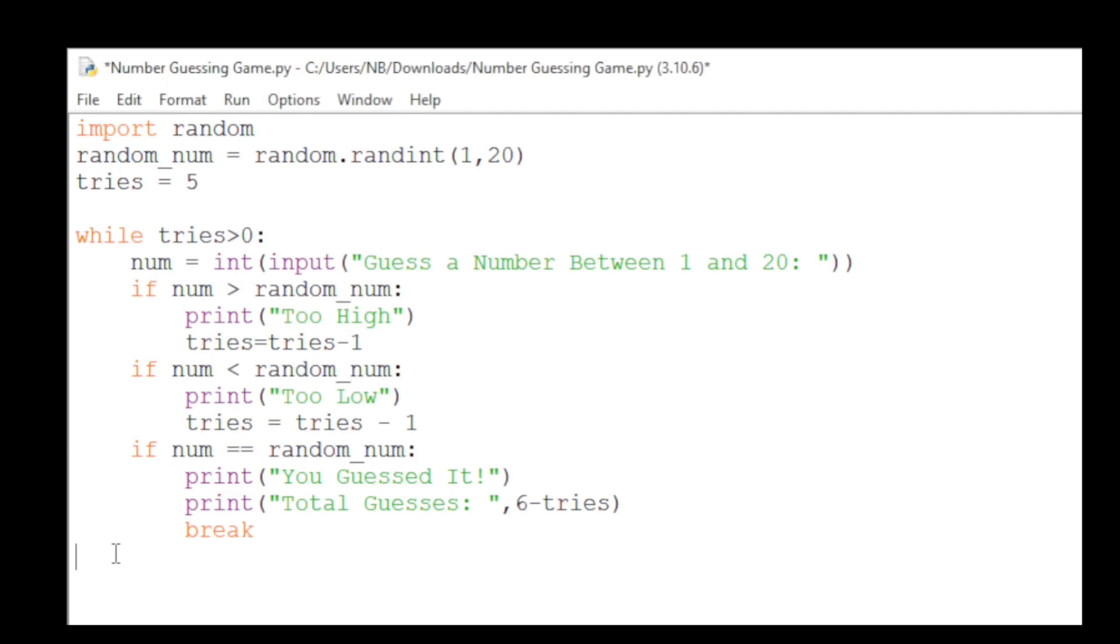Finally, outside the while loop, we will check if the tries is equal to 0. If it is, then we'll tell the user that they ran out of tries. To do this, we'll have an if statement. So if tries equals equals 0, then we'll print sorry, you ran out of tries.